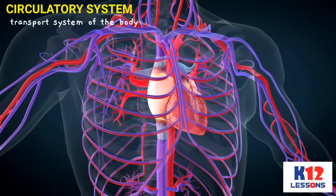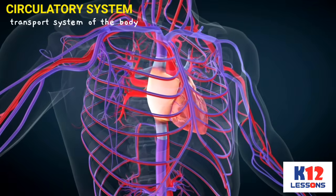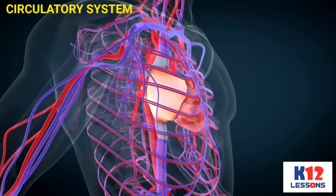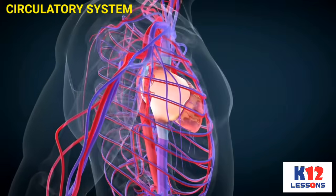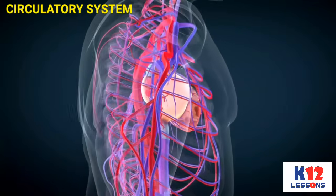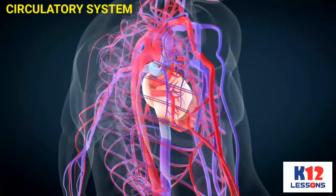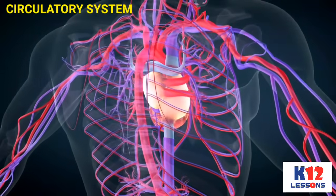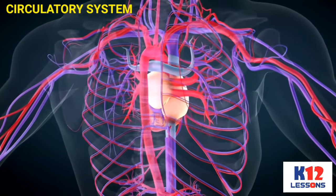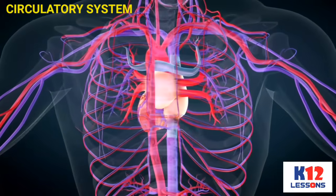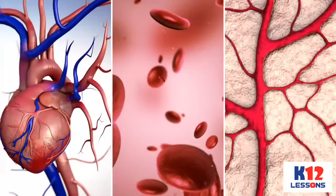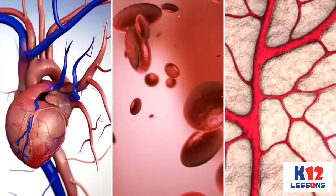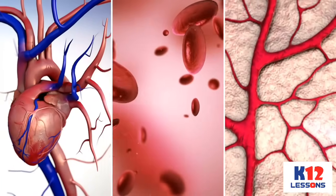The Circulatory System is a transport system of the body. It is responsible for the distribution of blood and other nutrients throughout the body. It is made up of the heart, blood, and blood vessels.